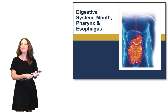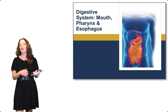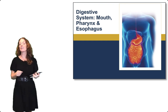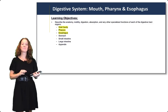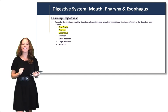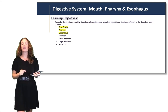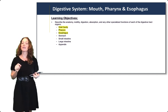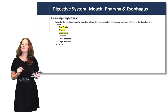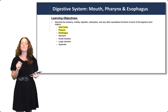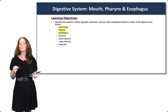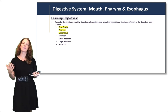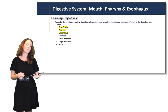In this lecture, we're moving through the digestive system, and we're going to start with the mouth, the pharynx, and the esophagus. This is the first of the structures of the GI tract. I want you to keep track of the structure and function of each of these areas as we move through — the anatomy, the functions, the motility, digestion, absorption, and any other specialized functions for that area of the GI tract.